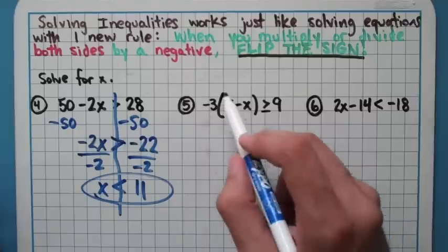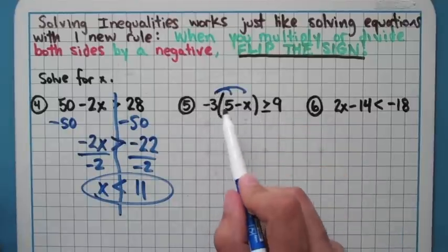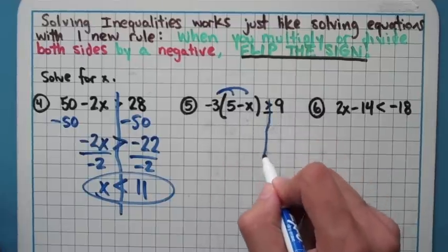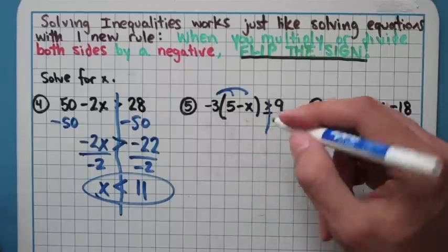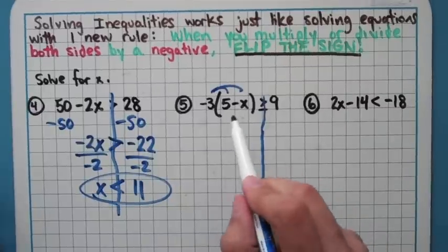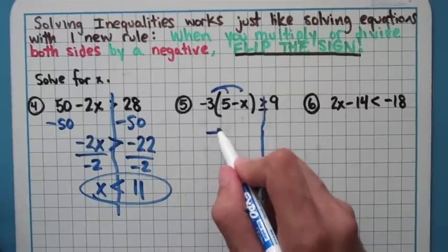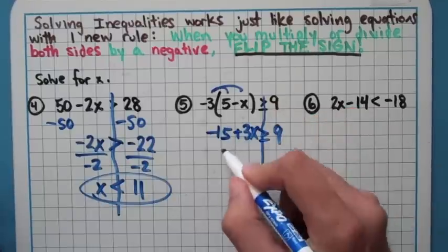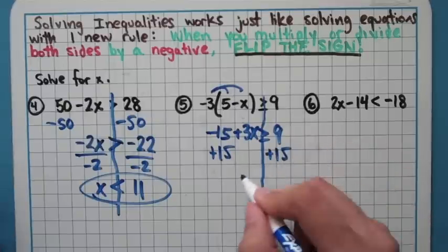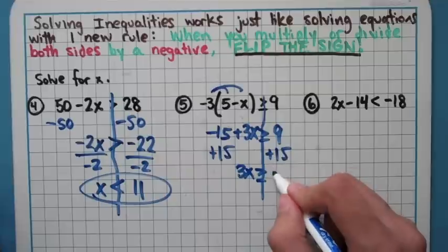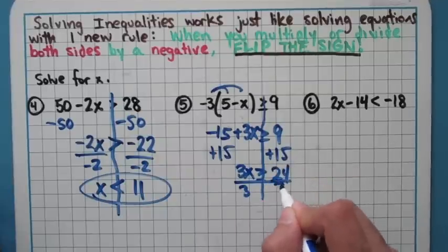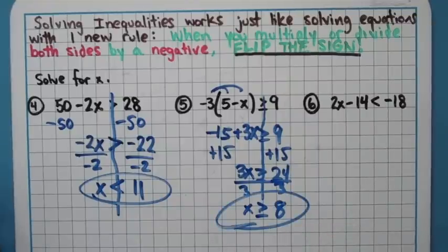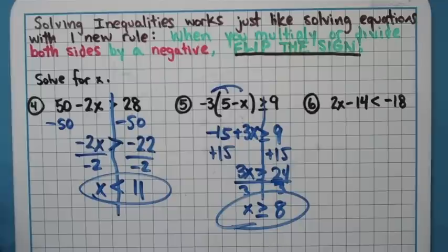On my next problem here, the first thing I'm going to do is distribute. Even though I'm multiplying by -3 here, I'm not doing it to both sides, the sign does not move right now, it stays exactly as is. When I distribute that -3 in, sign does not change, it's just to one side. So no flip right now. Plus 3x ≥ 9. I'm going to add my 15 to both sides. I get 3x ≥ 24. Divide by 3, I get x ≥ 8. No flip on this one. I did not divide or multiply by a negative, I divided by a positive 3. That sign stays exactly as is.